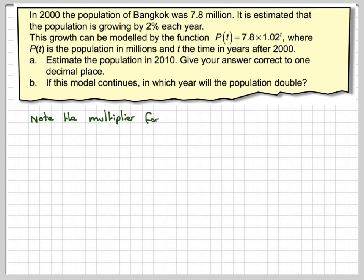Note, the multiplier for an increase of 2% is 1.02. P(T) = 7.8 × 1.02^T.